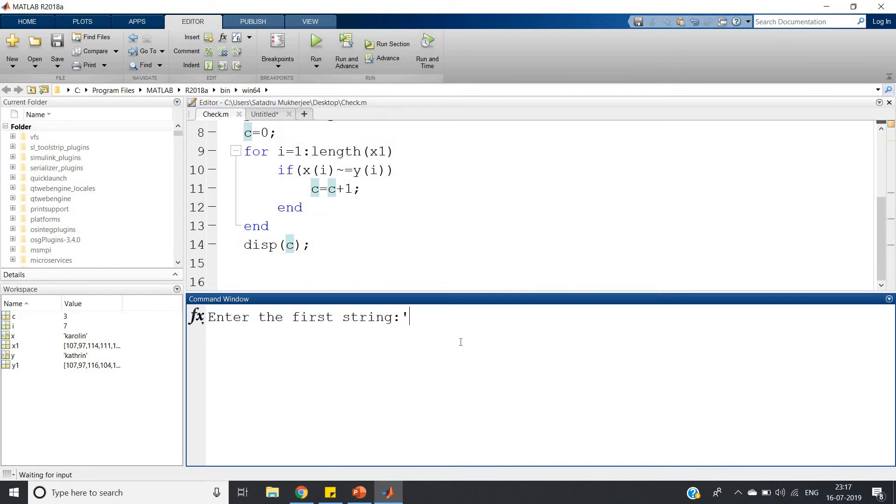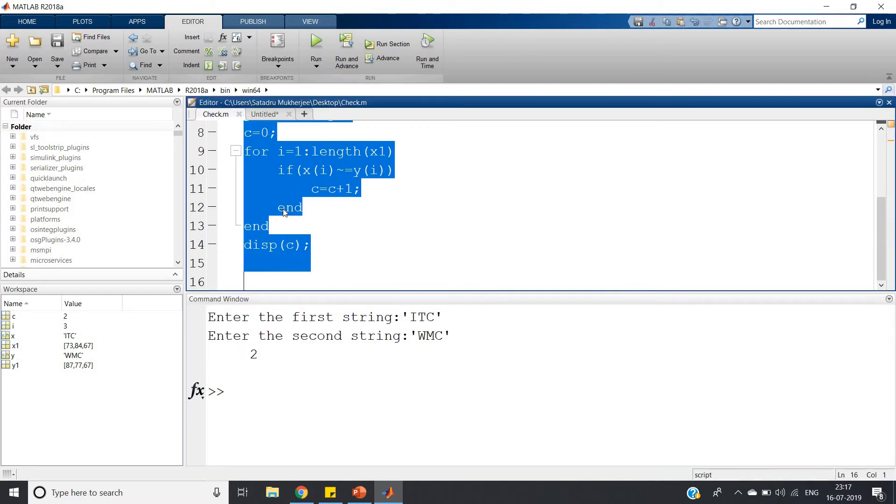Enter the first string, suppose you take ITC, which is one of the very important courses in electronics and communication engineering domain - information theory and coding. Another one you can take WMC, wireless and mobile communication. Now see, I and W one mismatch, E and M second mismatch, but C is matching. So only two mismatches, so Hamming distance is two. Let us check - the output is two.